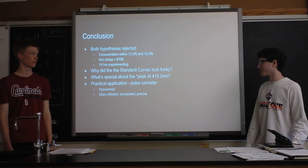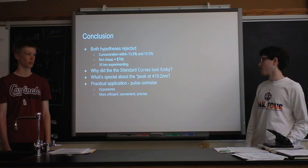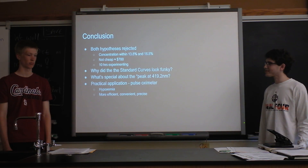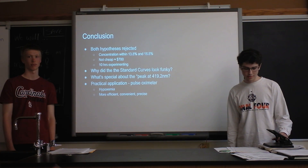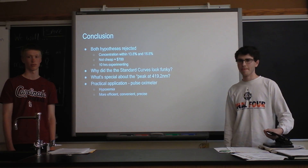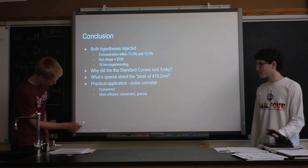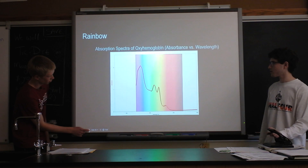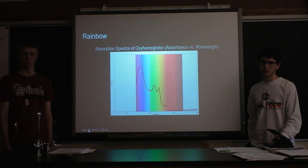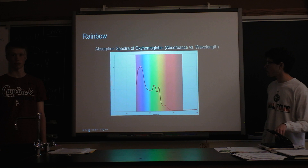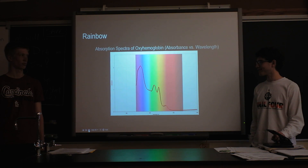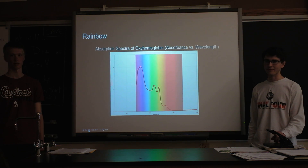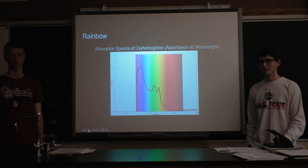The peak at 419.2 nm is not really local to oxyhemoglobin itself, and the pulse oximeter application was already discussed. Then the teacher asked a question: looking at the absorbance spectrum, since oxyhemoglobin is a red substance, why does the graph show such low absorbance in the red wavelengths? The answer is that things appear the color they reflect the most — so the red light is not being absorbed but rather reflected, which is why hemoglobin appears red.